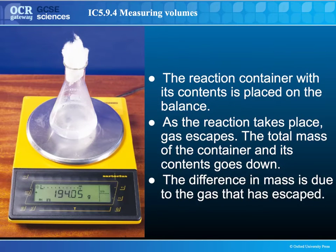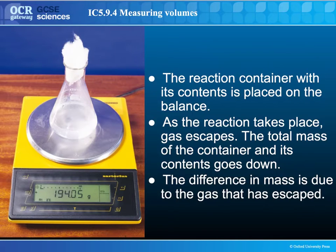The third and final method for measuring the amount of gas produced in a reaction is using the change in mass. Gases have mass and you can measure the amount of gas produced by measuring the change in mass using a top pan balance. As the gas escapes, the mass of the container will reduce. This method is an issue for very light gases like hydrogen — you need a very large volume of gas before you get a measurable change in mass. It's most useful for things like carbon dioxide and heavier gases.